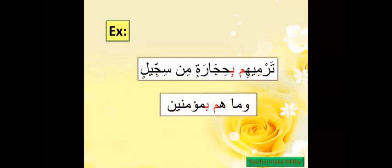Let's see how we make it exactly with examples. 'Tarmihim bihijarah.' So I will hide the Meme at Ba, but I will keep the Gunna of the Meme until I finish the Gunna length, and then I go for a clear Ba. Listen one more time: 'Tarmihim bihijarah.'